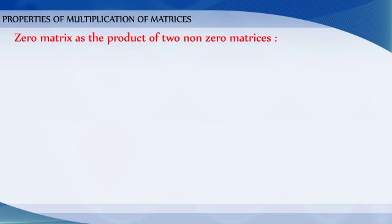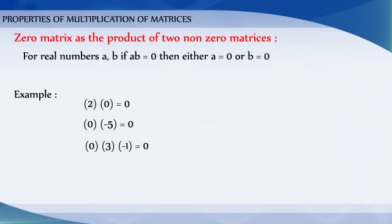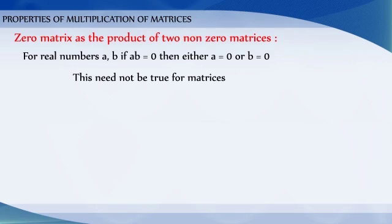Zero matrix as the product of two non-zero matrices. We know that for real numbers a, b, if ab = 0, then either a = 0 or b = 0. This need not be true for matrices. For example,